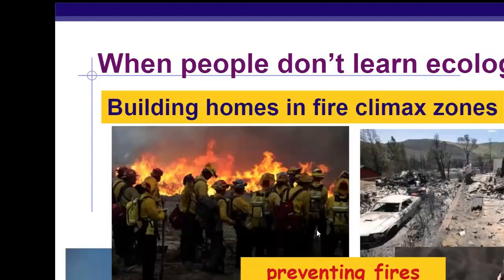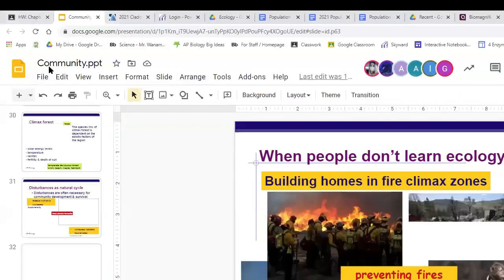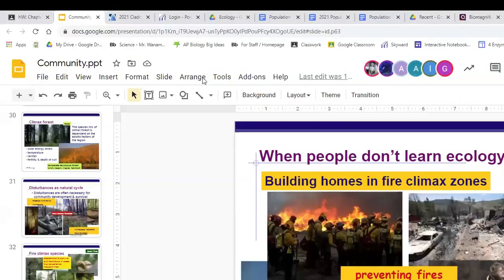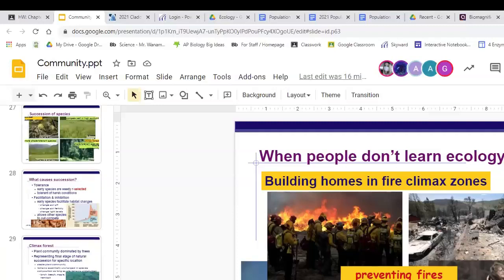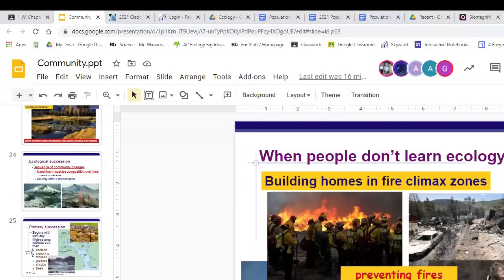This is what happens when we don't learn from ecology — bad things happen. So this just introduced a whole bunch of vocabulary and hopefully gave you a working knowledge of it. Ecology makes sense if you just be a good reader and a good thinker — you'll be able to analyze most situations. Remember: diversity is a good thing, and you always want the most diversity.